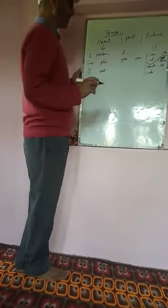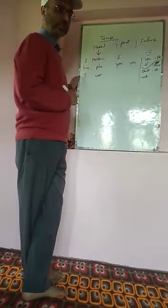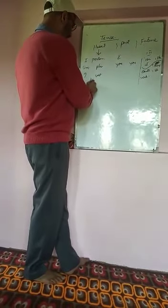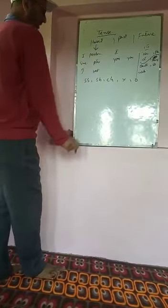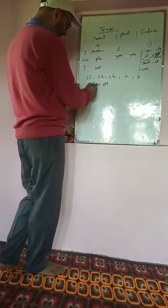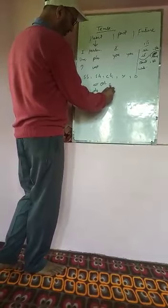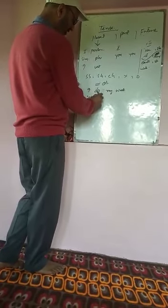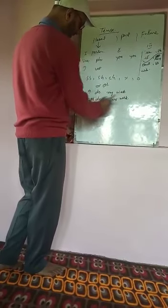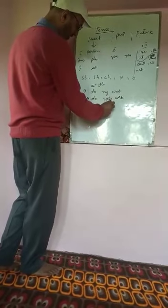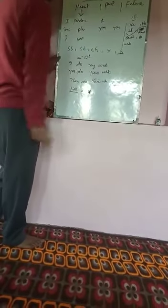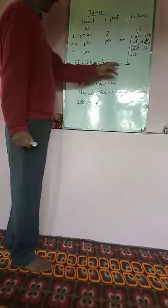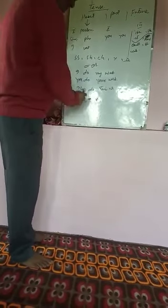But where do we use S, and where do we use ES? Remember: if the verb ends in SS, SH, CH, X, or O, add ES. For example: 'I do my work,' 'you do your work,' 'they do their work' — but 'he' is third person singular and the verb 'do' ends in O, therefore we use ES: 'he does his work.'